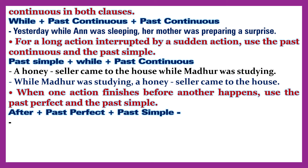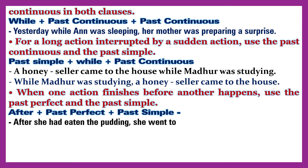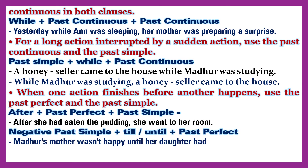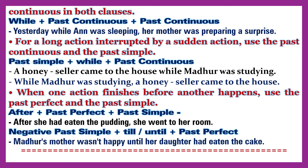When one action finishes before another happens, use the past perfect and the past simple. Structure: after + past perfect + past simple. Example: After she had eaten the pudding, she went to her room. Negative: past simple + till/until + past perfect. Example: Madhya's mother wasn't happy until her daughter had eaten the cake.